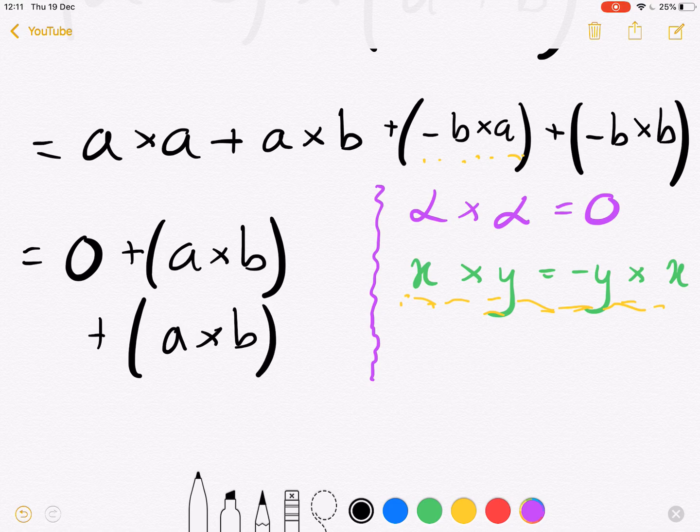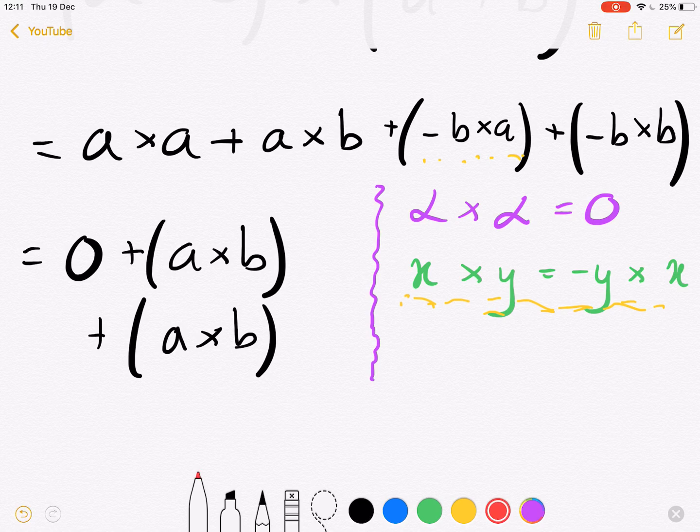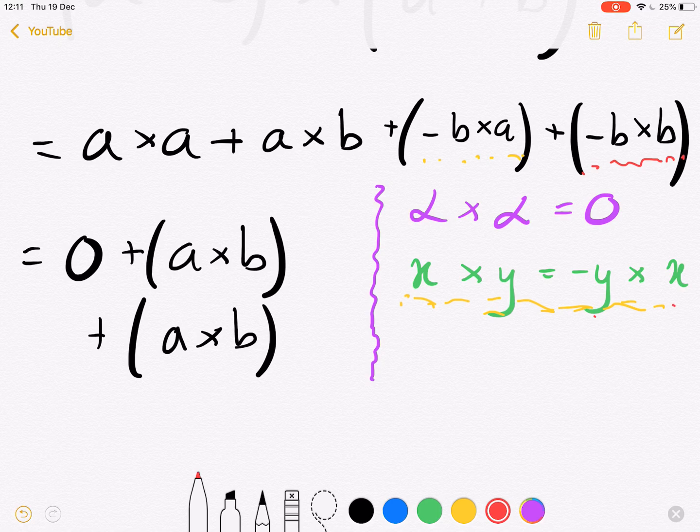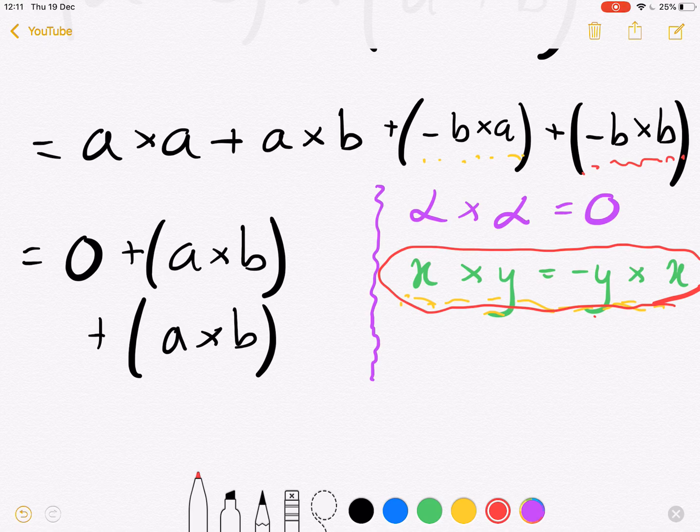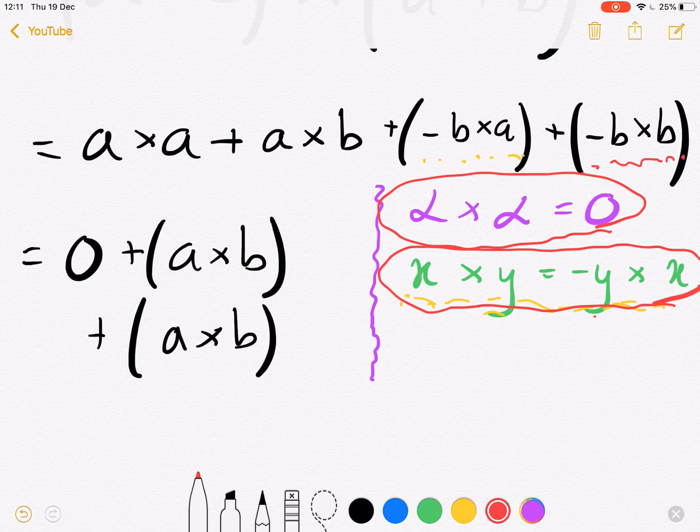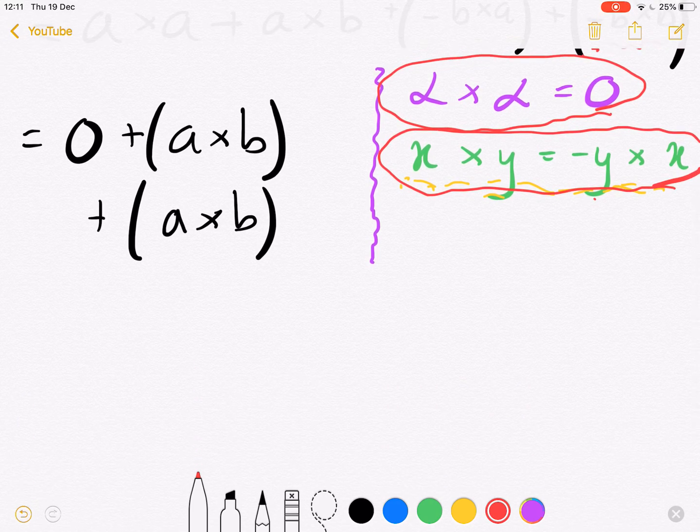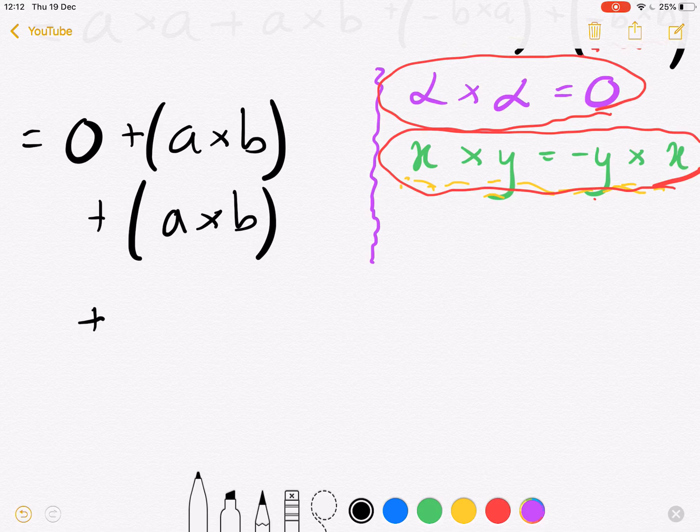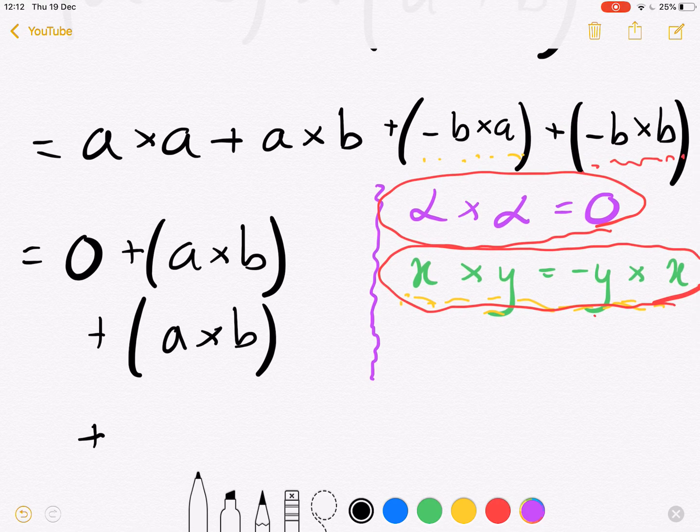And then for the final term, we can again use both of these rules. If we implement this rule, we can see that -b × b is the same as b × b, which is zero using the above rule. So it becomes plus b × b which is zero, so we can just put zero here.